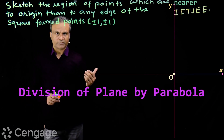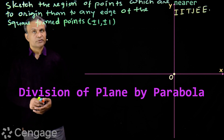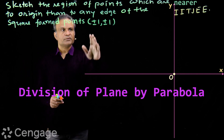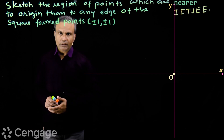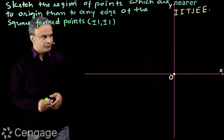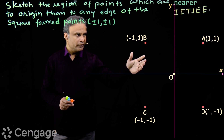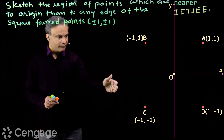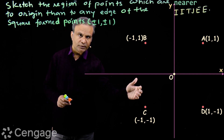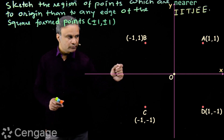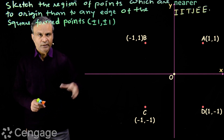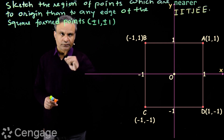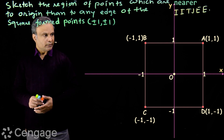This question was asked in a G exam: find the region of points which are nearer to origin than to any edge of the square formed by points (±1, ±1). On the coordinate plane, we have point A(1,1), point B(-1,1), point C(-1,-1), and point D(1,-1). Joining these points, we get square ABCD.